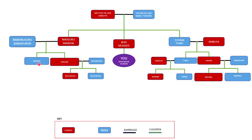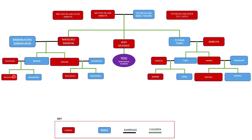Going to the male child coming from your wife's sister's marriage — you also address him as Mwana, treating him as your own male child. The female counterparts married to the male child you address as Mwora. The children that come from this marriage, both male and female, you address as Muzukuru.